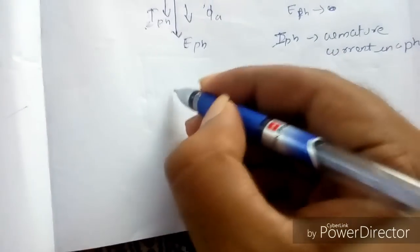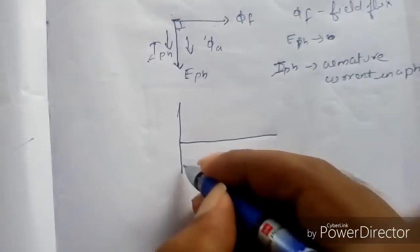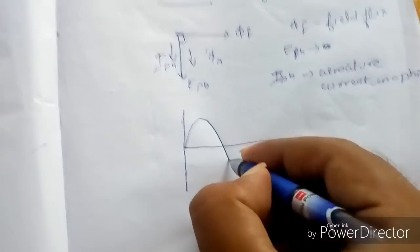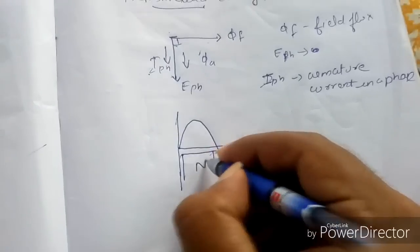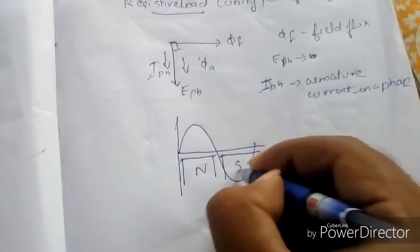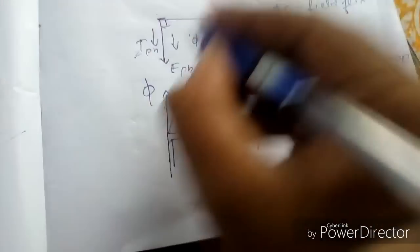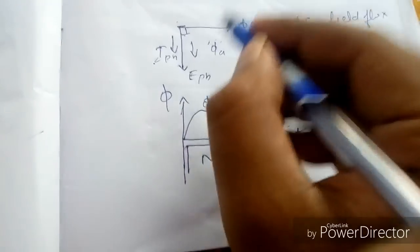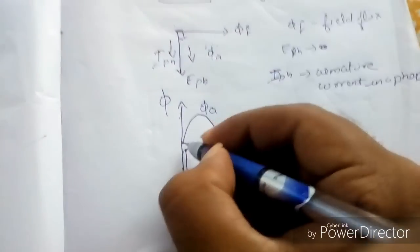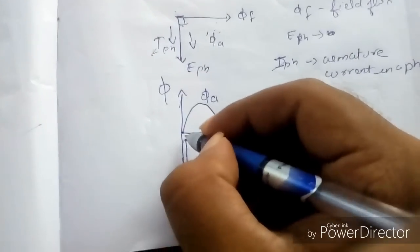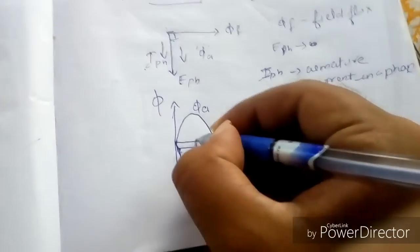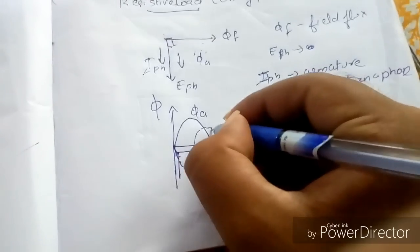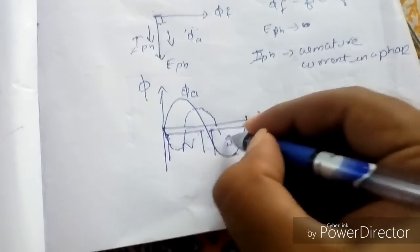Now you can see the waveform of the flux. The waveform is like this, with a north pole here and a south pole here. This is the armature flux shown here. From this phasor diagram you can see that the field flux is 90 degrees leading the armature flux, and the phase difference between them is 90 degrees. The field flux magnitude will be shown like this.